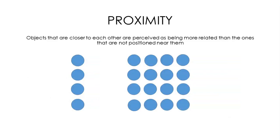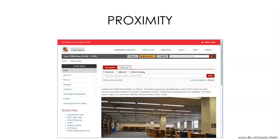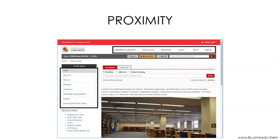The principle of proximity is the idea that objects closer to each other are perceived as being more related than those not positioned near them. Here, rather than just seeing 20 circles, we tend to see two groups — a group of four and a group of 16. An example in the wild might be buttons on a website navigation menu: they should all be together, usually along the top or stacked down the left-hand side, because they all have the same function. This is the library where I worked during graduate school, and it has both a top navigation menu and a side menu for navigating within the STEM library page.